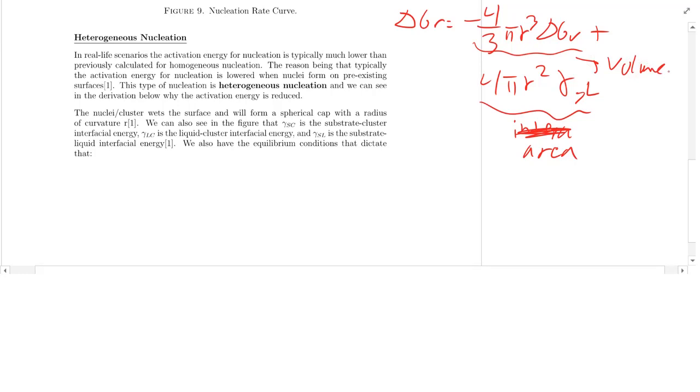We figured out this kind of R star value. So when you set the G R, set it equal to zero, you could find the critical radius that grows or shrinks. So if R is less than R star, we shrink. If R is greater than R star, we will grow.